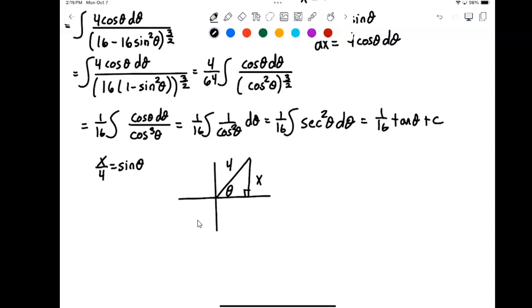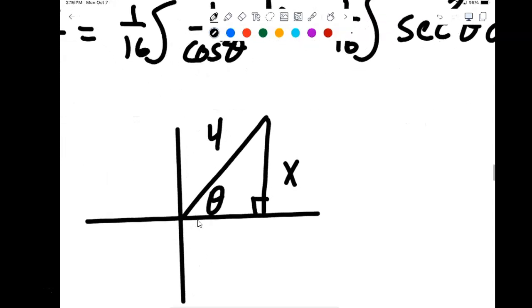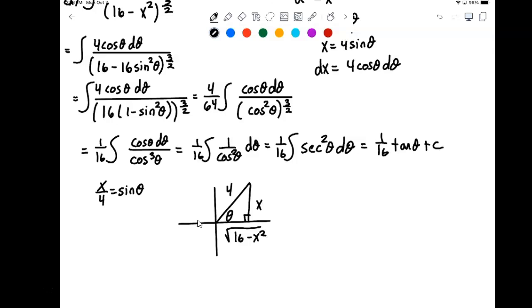We can then use our Pythagorean theorem to complete the third side. So the third side, of course, is going to be that square root of 16 minus x squared. Hypotenuse squared minus x squared. Square root of 16 minus x squared. All right, and now we can go, now that we have the picture set up, we can actually compute whatever trig function we have here.